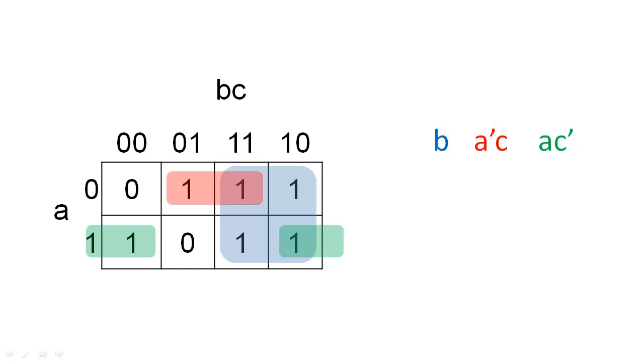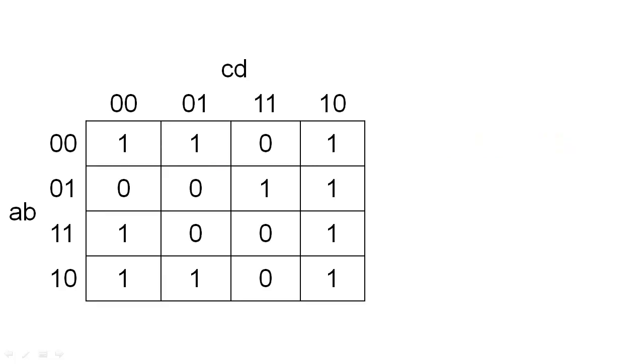Notice that this prime implicant wraps around from one side of the map to the other. To complete the expression, we simply OR these product terms of the prime implicants together. Unfortunately, not all K-maps are always this simple and there is not always a unique solution to every K-map. This K-map has two solutions.